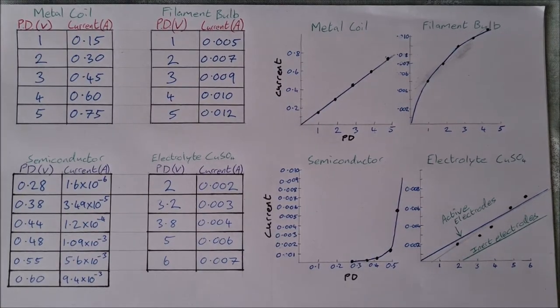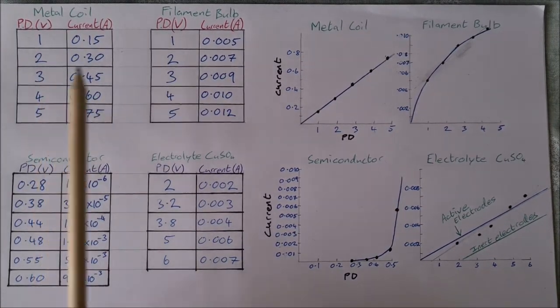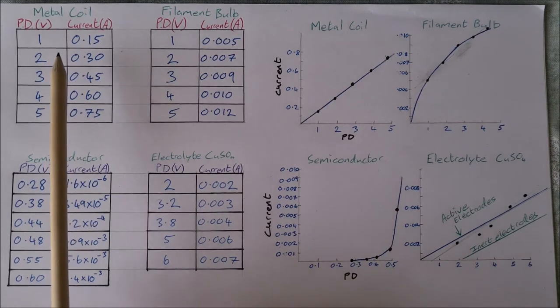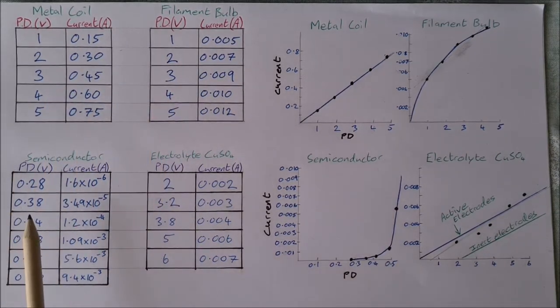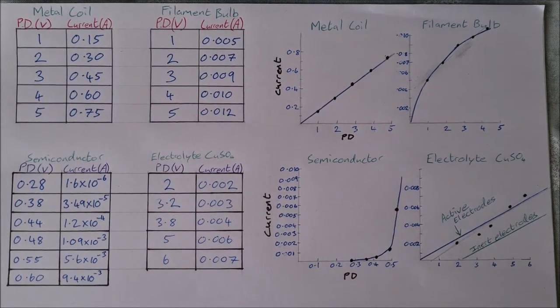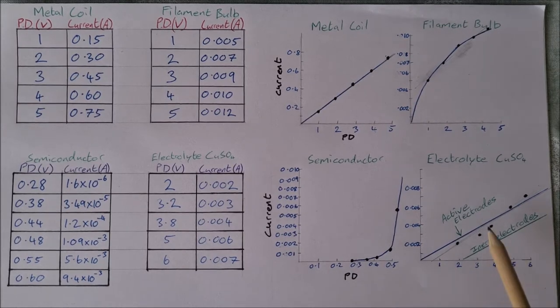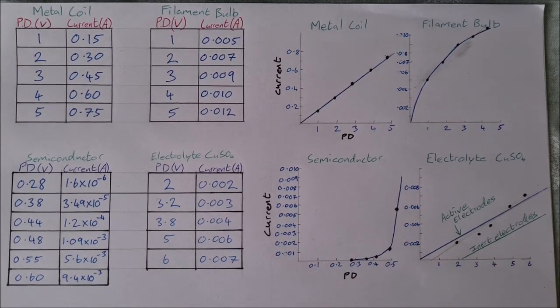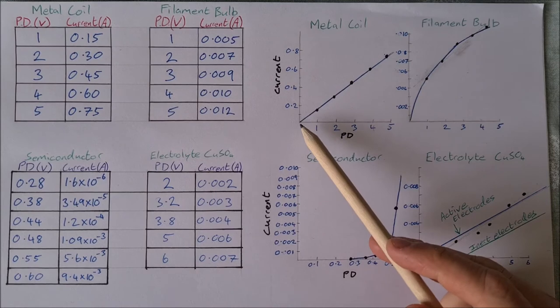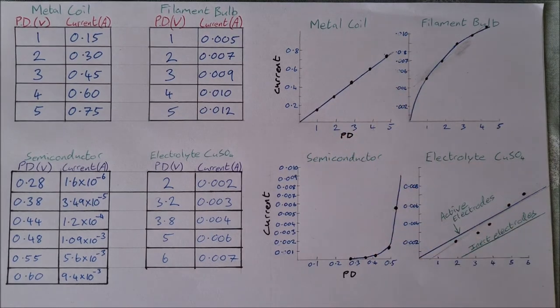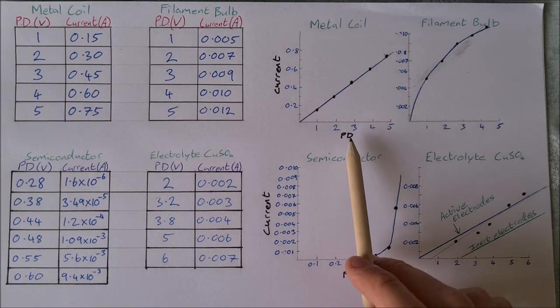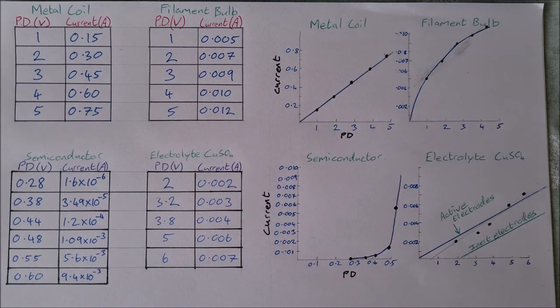Then we'll just have a look at the results then for each of these. So I have the tables here for the metallic conductor, the filament bulb, the semiconductor, and the copper sulfate solution. And here's the corresponding graphs. So for the metallic conductor, it basically just obeys Ohm's law. So potential difference and current are directly proportional.